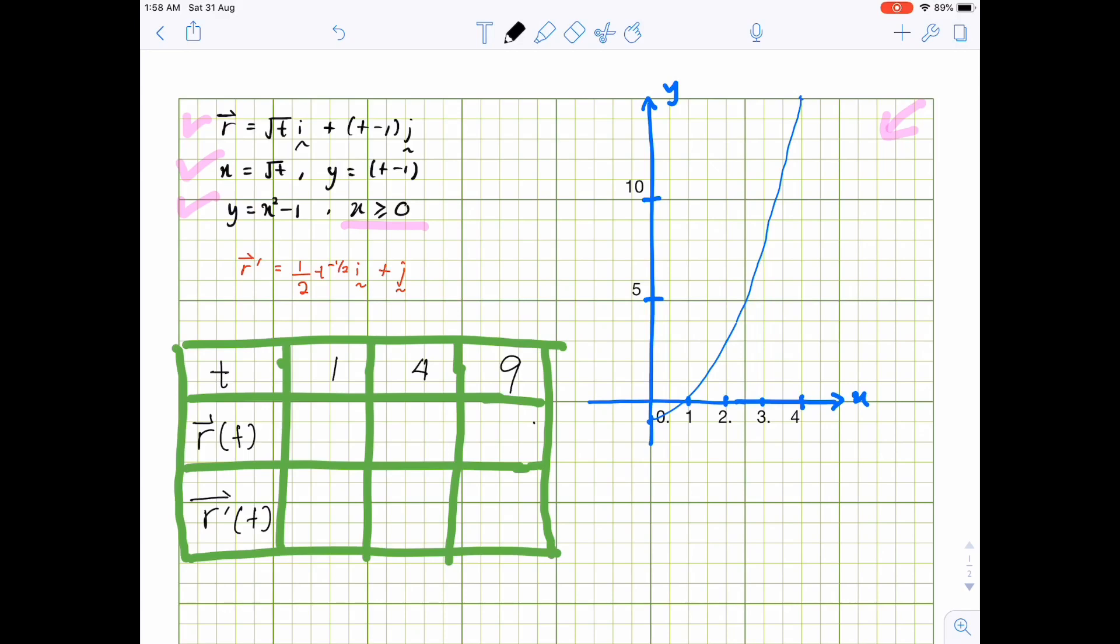When we substitute these values, we will have for the position vector: we will have here just i, and then we will have 2i plus 3j. Here, 3i plus 9j.